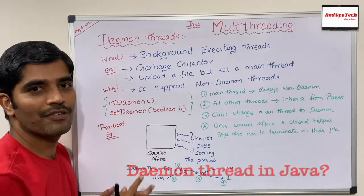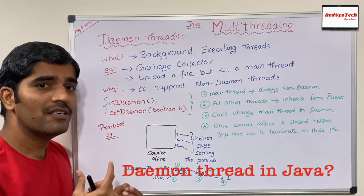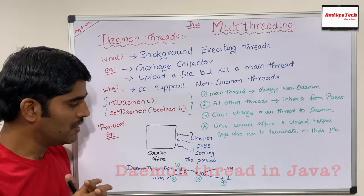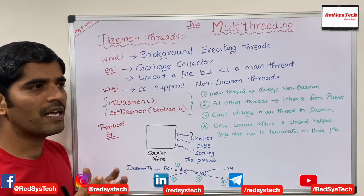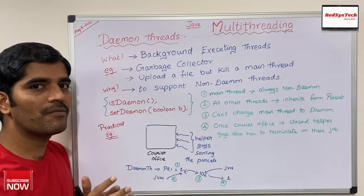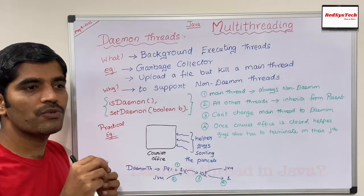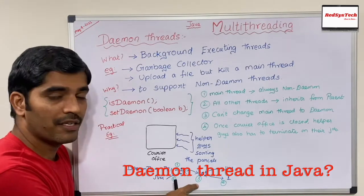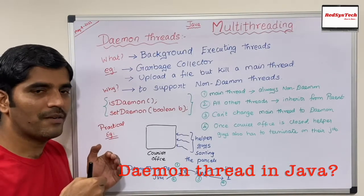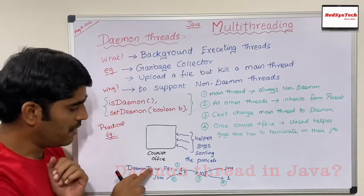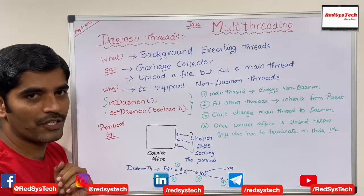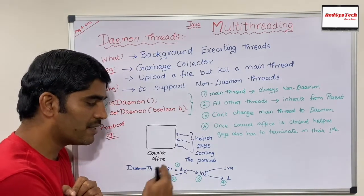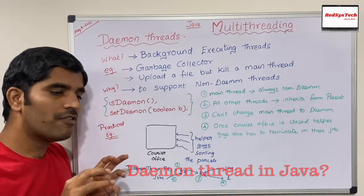Daemon threads actually execute in the background, so they are always assigned the least priority — priority one. Let's say your program is executing and gets stuck. The garbage collector needs to check for unused objects and clean them. The JVM needs to assign the garbage collector thread a higher priority — because the main thread has a priority of five and the daemon thread has priority one, it won't execute otherwise. So it's the JVM's duty to raise the daemon thread's priority from one to ten, so the daemon thread can execute, the garbage collector looks for unused objects and cleans them, making memory available for the main thread to proceed.